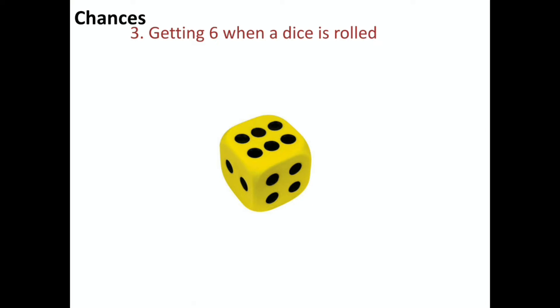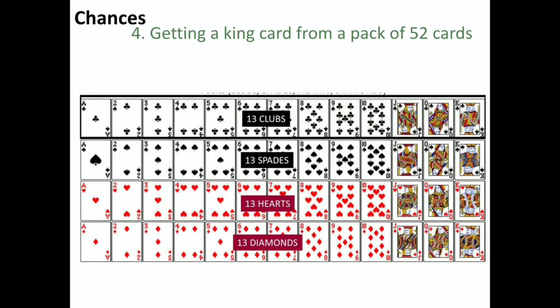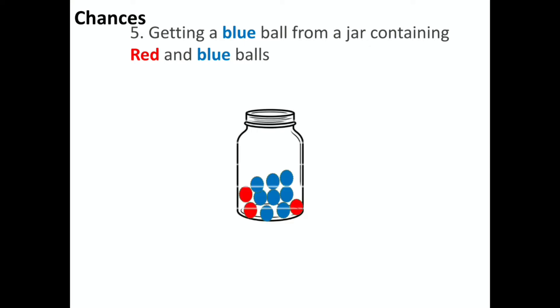So what can we say? We say getting 6 is less likely. Moving on: getting a king card from a pack of 52 cards is also less likely. There are 4 king cards out of 52, so getting 4 out of 52 is less likely. The next example: getting a blue ball from a jar containing red and blue balls — if the jar has 8 blue balls and 3 red balls, taking out a blue ball is more likely.